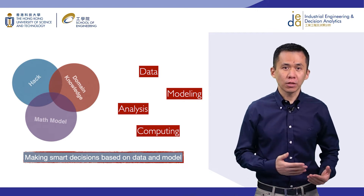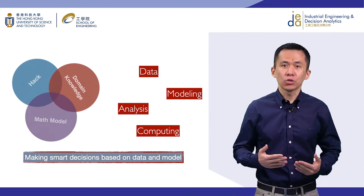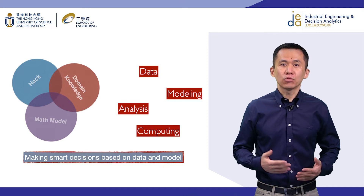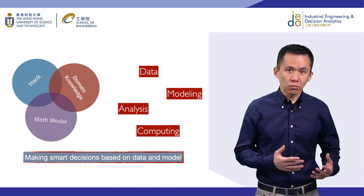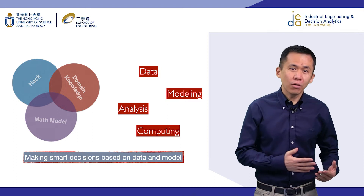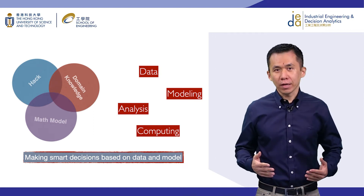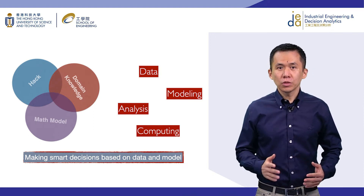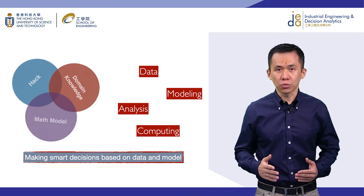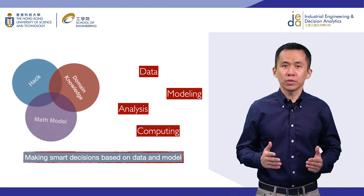The domain knowledge by itself is not enough. You need to have the hacking ability to utilize modern database and programming to store and process data at large scale. In order to see the insight of the data and to create value, you need to build models to model how the underlying business works. In this way, you can perform analysis and see how different decisions will affect the key performance indicators. Often you need to use hacking ability again to utilize modern programming languages such as Python to compute the optimal solution. So a good solution to a real problem lies in the intersection of these three areas.